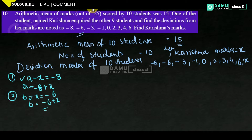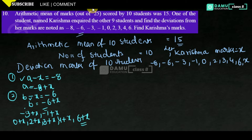These are the actual marks: minus 3 plus x, minus 1 plus x, 0 plus x, 2 plus x, 3 plus x, 4 plus x, 6 plus x. Note that the deviation values are subtracted from actual marks — these expressions represent the actual marks, not just the deviated marks.